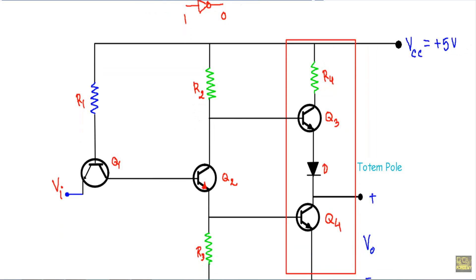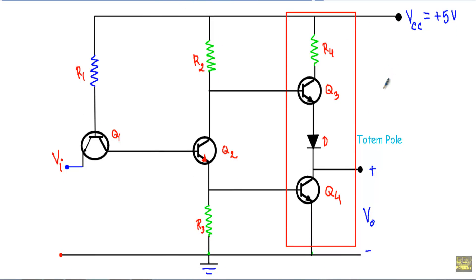This is the circuit structure of our TTL inverter circuit. The transistor Q1 will act as an input transistor and will be an NPN transistor. Transistor Q2 will act as a phase splitter, and transistor Q3 will be placed on top of transistor Q4. Therefore, transistors Q3 and Q4 will form our TTL totem pole structure, and diode D will ensure that at a time one transistor will be in ON state — when Q3 is ON, Q4 will be OFF, and vice versa.